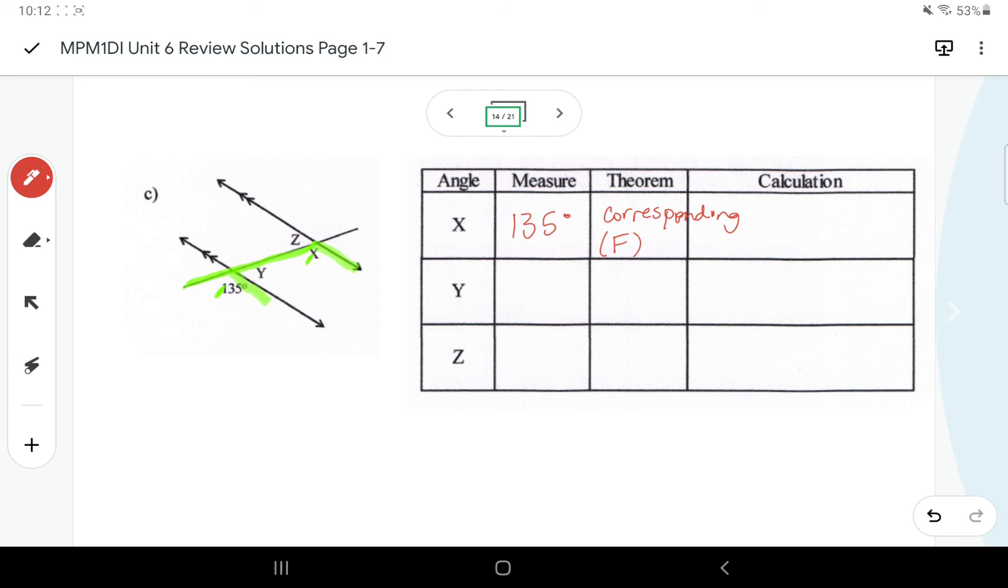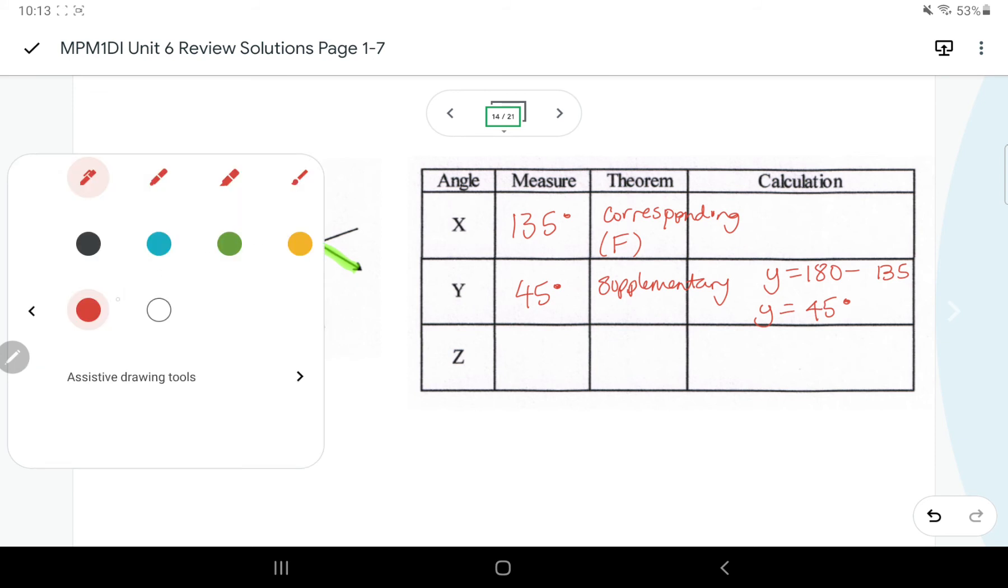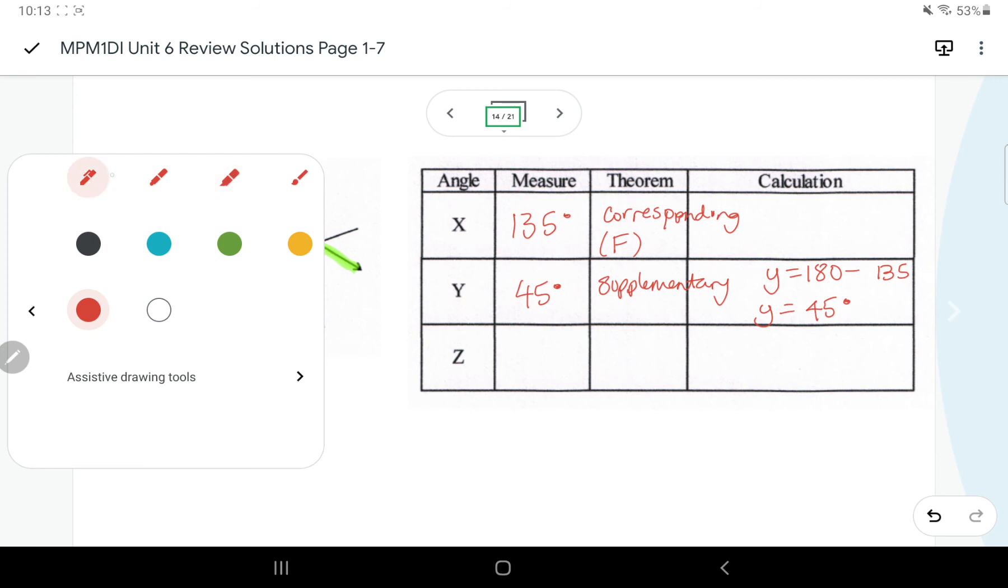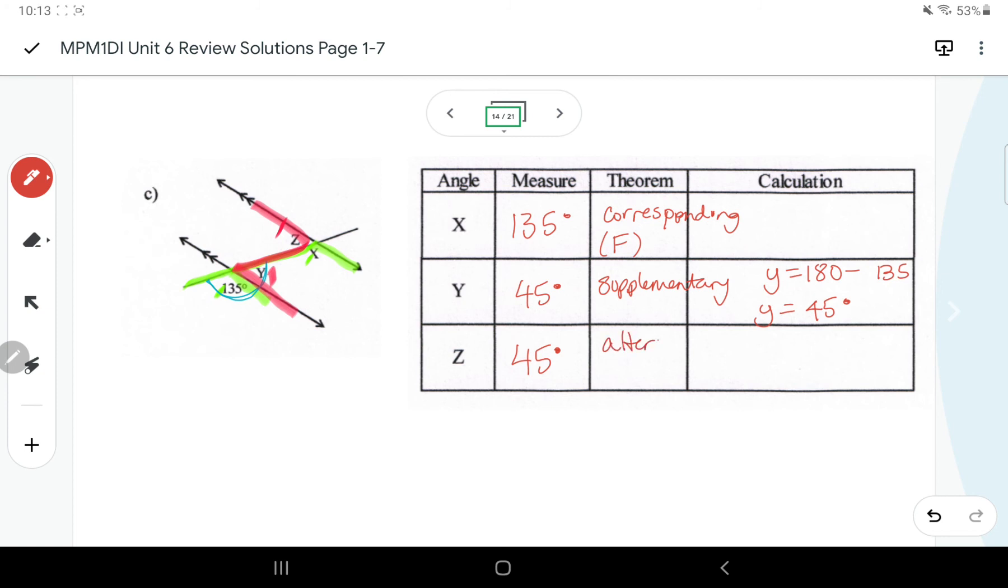You can do Y in a number of different ways. I might look at it as supplementary, making a 180 degrees with that 135, so Y equals 180 minus 135, so that's 45 degrees. And then I might highlight a Z pattern, so that Y and Z are the same angle. So Z would also be 45 degrees, which is the alternating angles or the Z pattern.